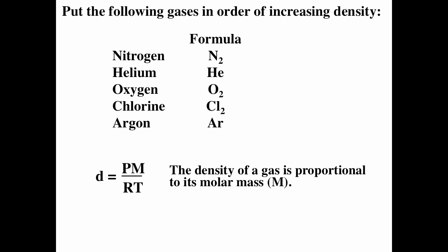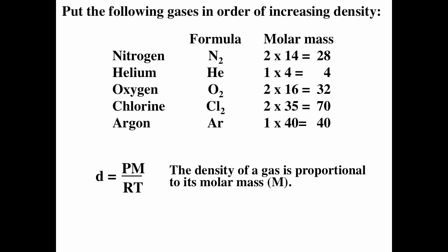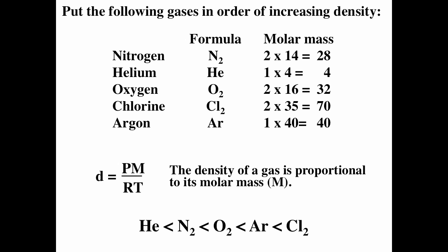Nitrogen is N2, helium is a noble gas (He), oxygen is O2, chlorine is Cl2, and argon is a noble gas (Ar). Their molar masses: N2 = 2×14 = 28, He = 4, O2 = 2×16 = 32, Cl2 = 2×35.4 ≈ 70, Ar = 40. In order of increasing density: helium < nitrogen < oxygen < argon < chlorine, since chlorine has the highest molar mass and helium the lowest.